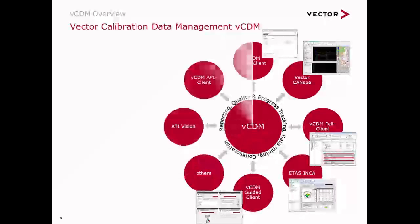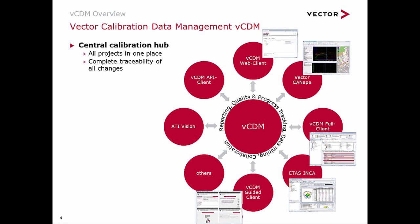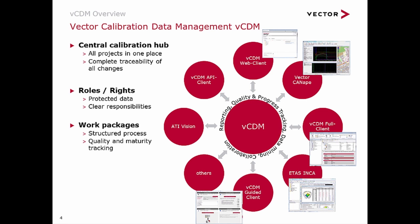VCDM is your central hub for all calibration data. A database manages all calibration projects and their documents — A2L, HEX files, parameters, and many more. Access to all relevant information is administered by defined roles and rights, guaranteeing that calibration data is only accessible to appropriate individuals. Work packages for individuals or teams help ensure completeness of parameter deliveries, reduce parameter conflicts, and support easy tracking of progress and maturity.